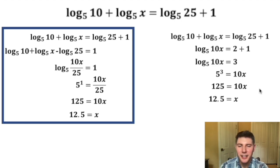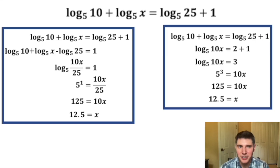To get x alone, we divide both sides by 10, and that gives us 12.5 equals x. So this was an alternative way to solve it.